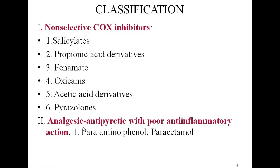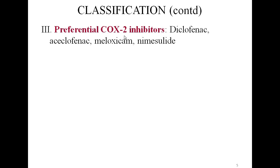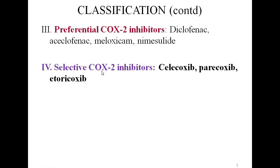The second major group includes drugs with analgesic and antipyretic activity but poor anti-inflammatory action, for example paracetamol and nefopam. The third group consists of preferential COX-2 inhibitors — they do inhibit COX-1 and COX-2 but have a preference for cyclooxygenase 2; examples include diclofenac, aceclofenac, meloxicam, and nimesulide. Finally, we have selective cyclooxygenase 2 inhibitors, namely celecoxib, parecoxib, and etoricoxib. Selective COX-2 inhibitors are a frequently appearing 5-mark question in your exams.